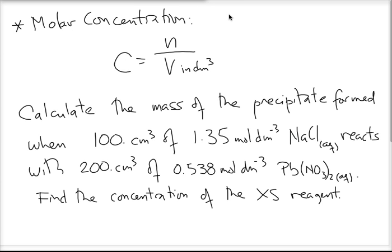Molar concentration is equal to the number of moles of the solute divided by the volume of the solution in decimeters cubed or in liters — they are equivalent. So if I give you a problem: calculate the mass of the precipitate formed when 100 cm³ of 1.35 molar aqueous sodium chloride reacts with 200 cm³ of 0.538 molar aqueous lead(II) nitrate. In addition, find the concentration of the excess reagent. Notice that here, instead of excess in terms of mass, we want a concentration, so we'll need our number of moles and the volumes.